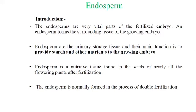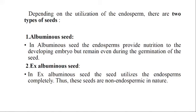Simply we define the endosperm as: endosperm is a nutritive tissue found in the seed of nearly all flowering plants after fertilization. Endosperm is the primary storage tissue and its main function is to provide starch and other nutrients to the growing embryo. The endosperm is normally formed in the process of double fertilization. Simply, endosperm is the reserved food material for the growing embryo.